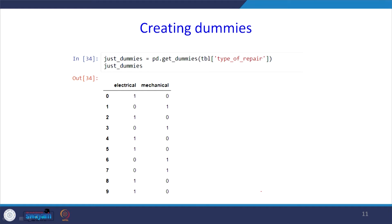How to create a dummy variable for this categorical data? The new dummy variable: just_dummies = pd.get_dummies(tb1['type_of_repair']). When you display just_dummies, you see that one variable has been split into two parts — one for electrical and one for mechanical. The presence of 1 indicates electrical; the absence of 1 (i.e., 0) indicates mechanical.